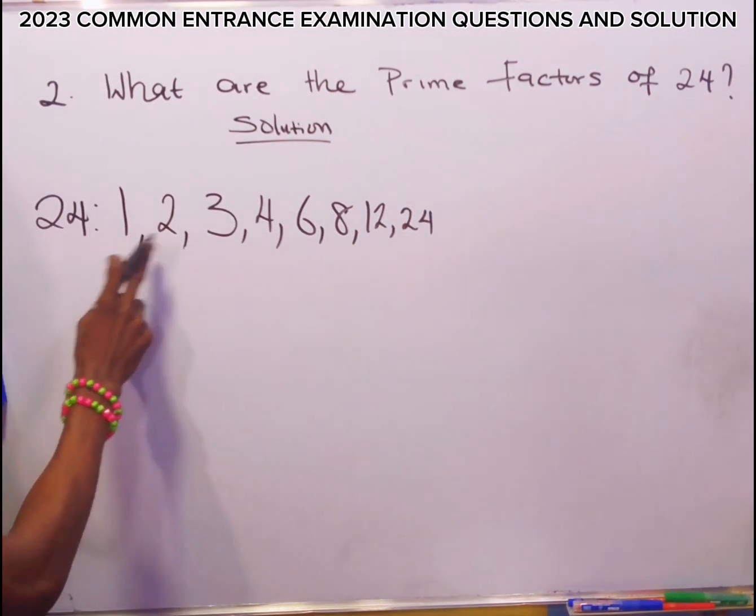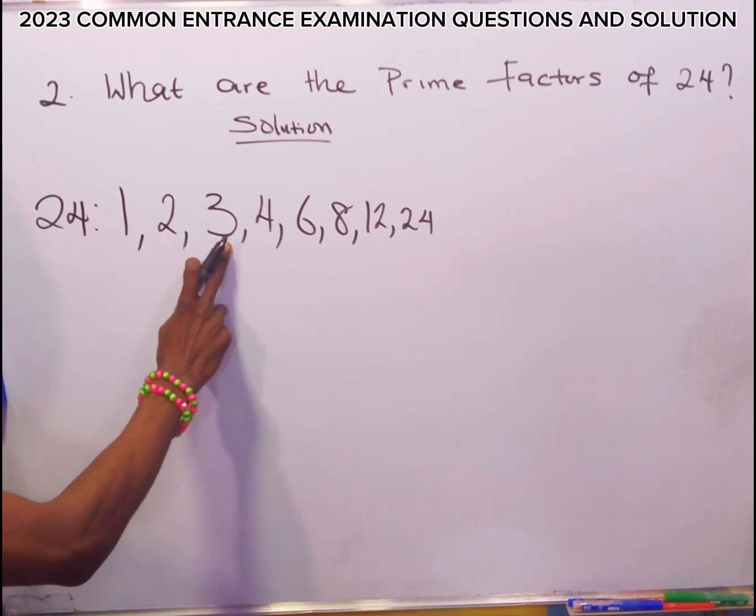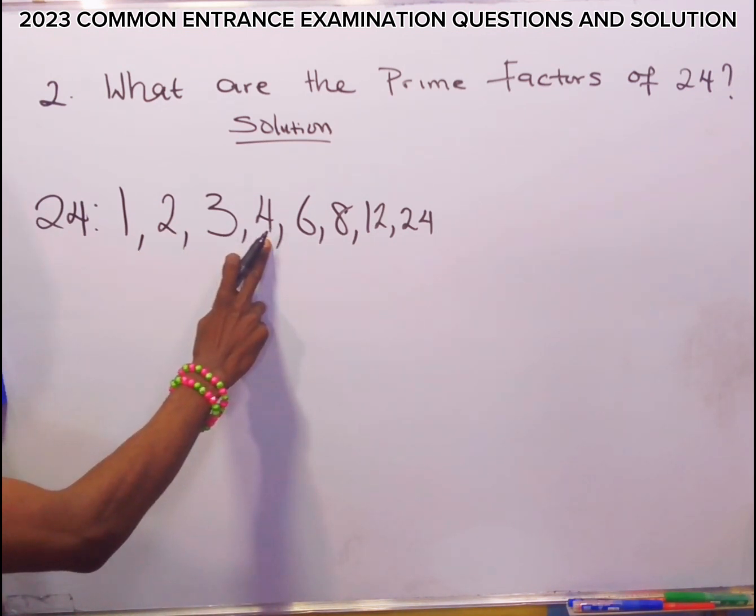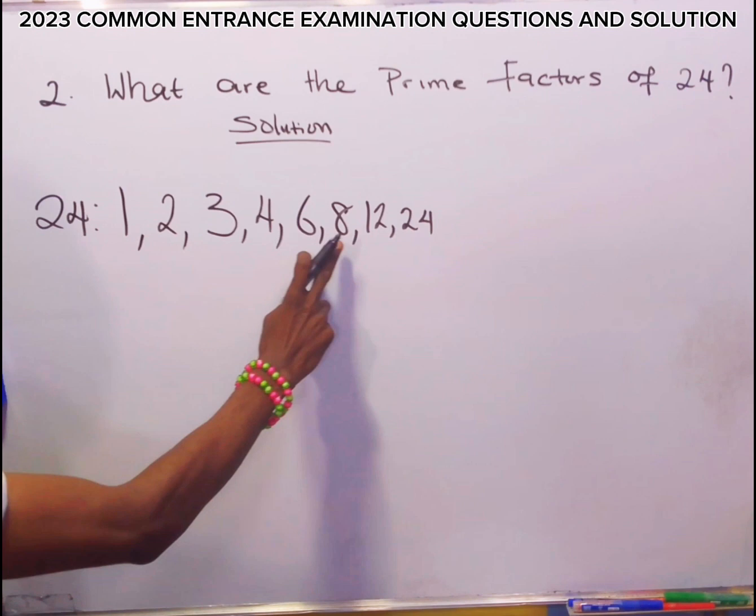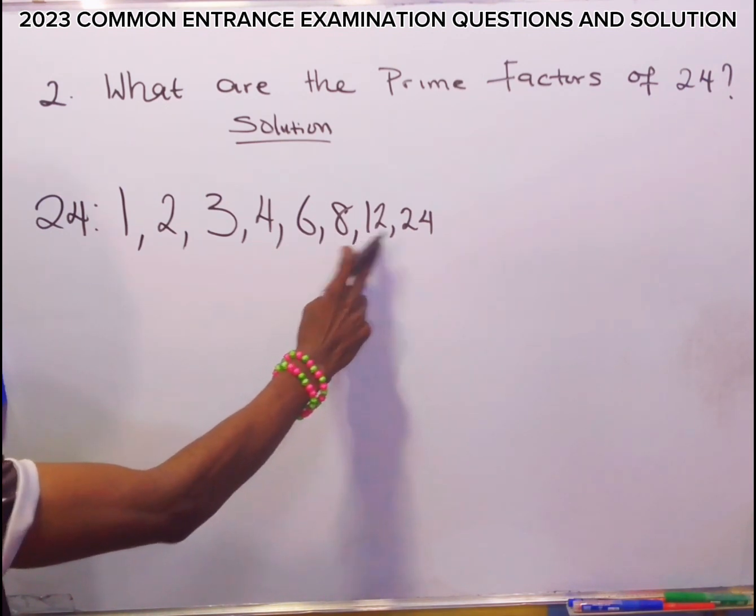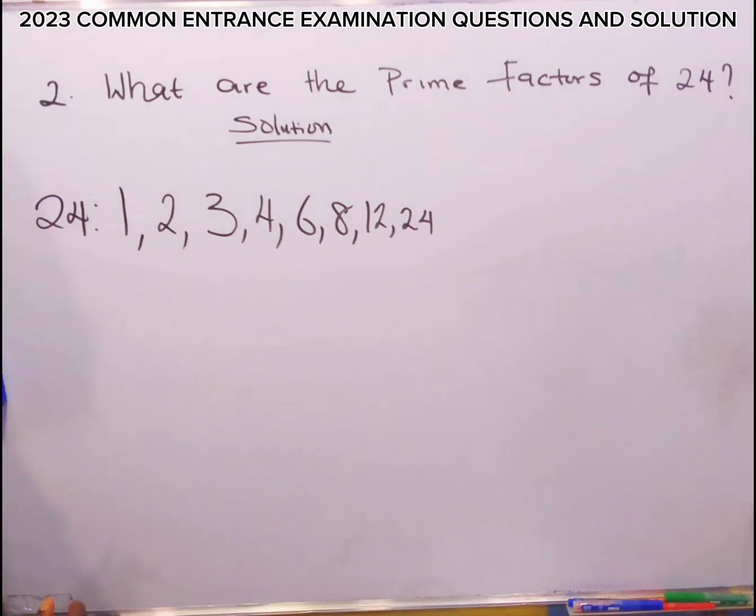24 can divide 1, 24 can divide 2, 24 can divide 3, 4, 6, 8, 12, and 24. So all these numbers are the factors of 24.